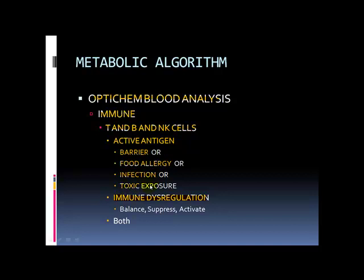We also want to consider toxic exposures — heavy metals, mercury, pesticides. We have so many environmental chemicals right now that the toxicity of our environment can begin to cause immune activation if your body can't keep up with what's coming in. If it's immune dysregulation — say the T helper to T suppressor ratio is less than 1.5 but your cytotoxic T cells are super high with no apparent reason — we call that immune dysregulation, a dysfunction. So we balance, suppress, and activate the areas of your immune system that need support.